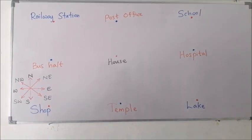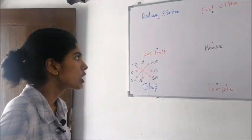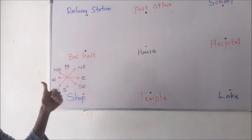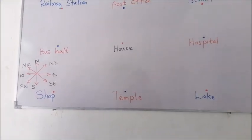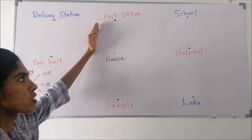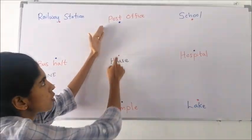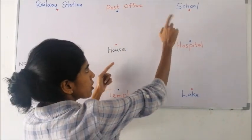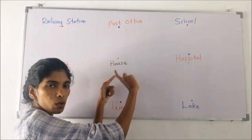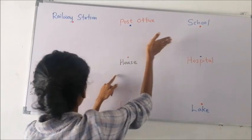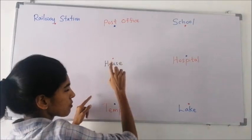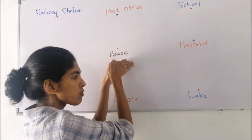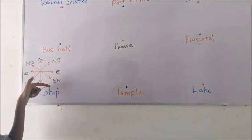In this next example, you are given the locations of a few places. With the help of these eight directions, we will mention the locations of places. The post office is located to the north of the house. The school is located to the north-east of the house. The lake is located to the south-east of the house.